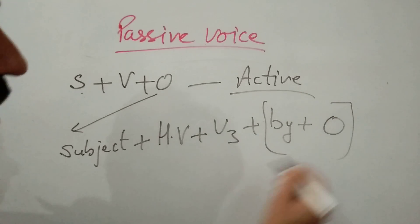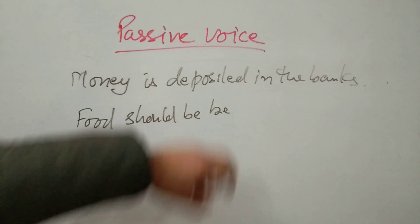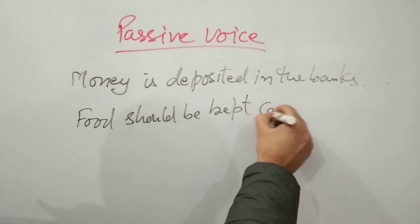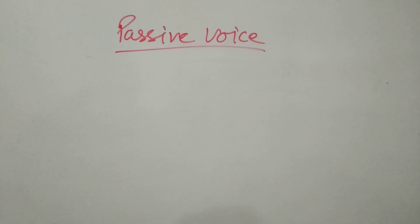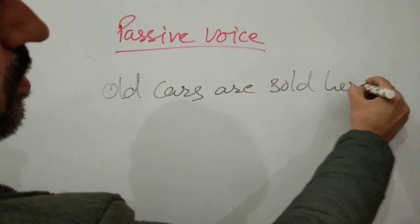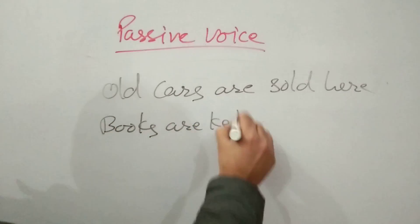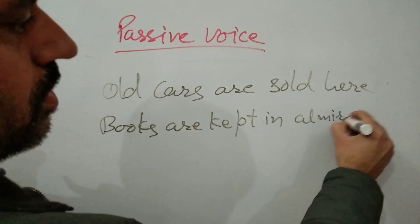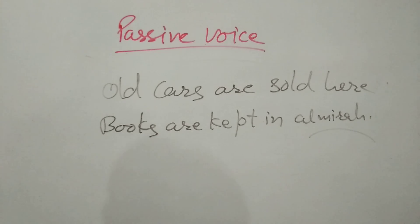To form a passive voice, you need: subject (which is actually the object turned subject), helping verb, and the third form of the verb — that's the key structure. Examples: 'Money is deposited in the banks.' 'Food should be kept covered.' 'Old cars are sold here' — here 'are' plus third form makes it passive. 'Books are kept in the almirah.' You can also make compound sentences by combining two passive voice sentences.